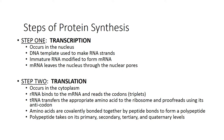The DNA template is used to make RNA strands. Immature RNA is modified to form messenger RNA. Messenger RNA leaves the nucleus through the nuclear pores, and then translation occurs in the cytoplasm. Ribosomal RNA binds to the messenger RNA and reads the codons or triplets. Transfer RNA transfers the appropriate amino acids to the ribosome and proofreads via its anticodon. Amino acids are then covalently bonded together by peptide bonds to form a polypeptide, which can then take on the different levels of shape discussed previously.